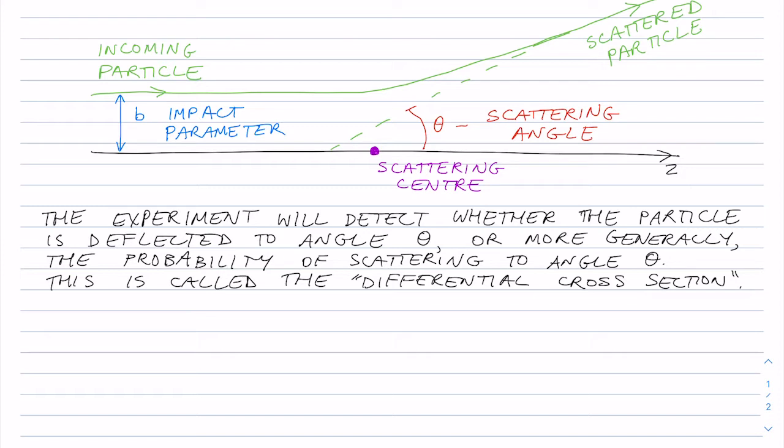Now, this is usually denoted as d sigma d omega, but Griffiths used a slightly different notation. He writes it as D theta.